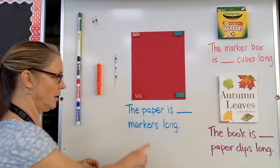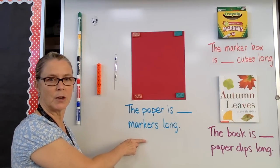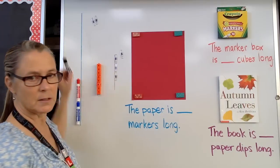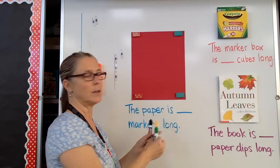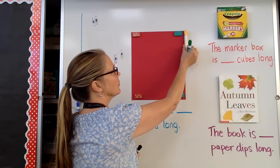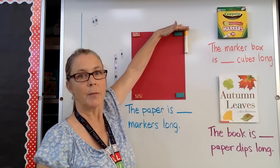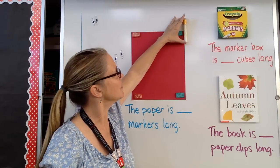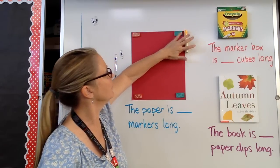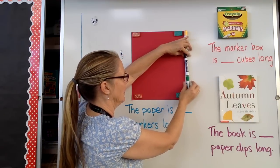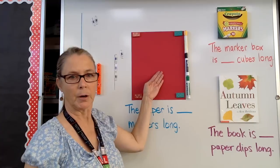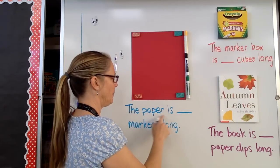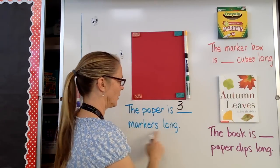Now let's go ahead and measure this paper here, and we're going to use markers. So let's demonstrate how many markers long this paper is. I'm going to come right here to the end and start at the top. Here's one — it's right at the top, even with the top of the paper. I can't have it over here or up here; it has to be even with the top of the paper. So here's one, two, three. Our paper is three markers long. The paper is three markers long.